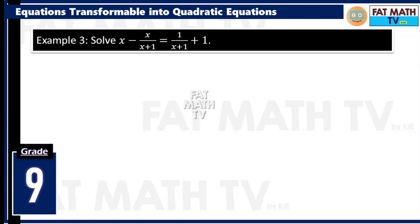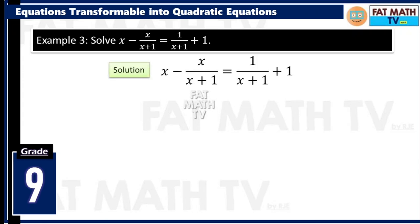Number 3 — we have a rational algebraic equation: x minus x over x plus 1 equals 1 over x plus 1 plus 1. The first step is to identify what to multiply to both sides to get rid of fractions — that's the least common multiple of the denominators. In this case, we only have one denominator: x plus 1. So we will multiply both sides of the equation by x plus 1, and then distribute.